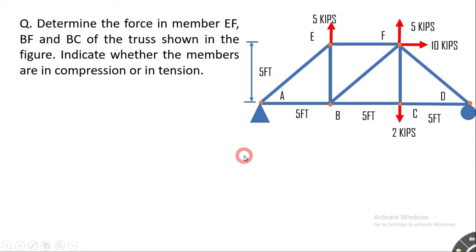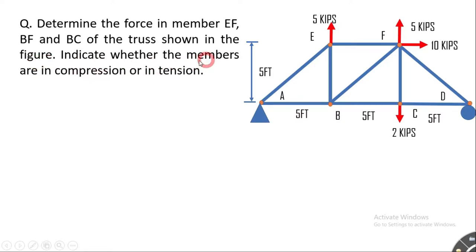We are going to understand the method of sections while solving this problem. The problem says: determine the force in members EF, BF, and BC of the truss shown in the figure, and indicate whether the members are in compression or in tension. We have to determine member forces in EF, this inclined member, and the BC member.